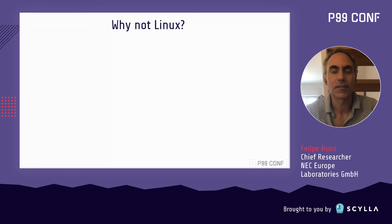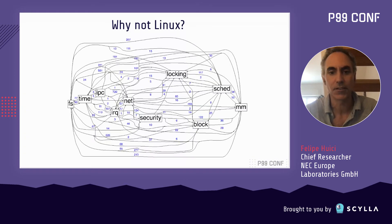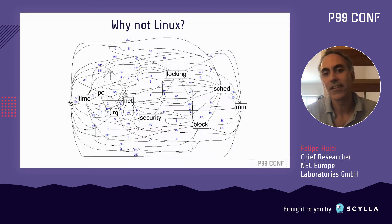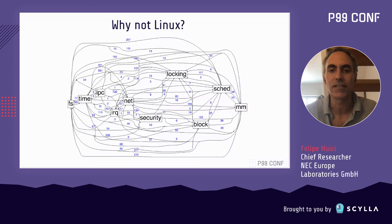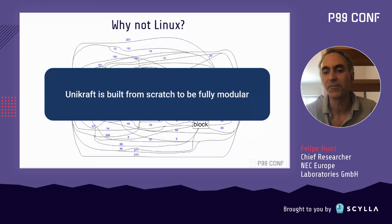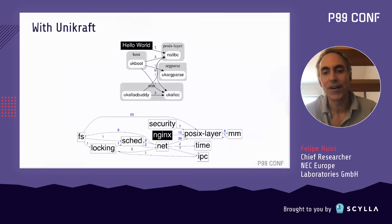Why don't we just use Linux? We built a dependency graph of the Linux kernel between the major modules. If you see a line between two labels, there's a dependency between those modules, and the number above it in blue shows how many dependencies exist. What this shows graphically is that while you can in principle remove some modules if your application doesn't need them, in practice it's very difficult. Instead, Unicraft is built from scratch to be fully modular. A small graph showing a Hello World application or Nginx running on Unicraft demonstrates that the modules and dependencies are much fewer.